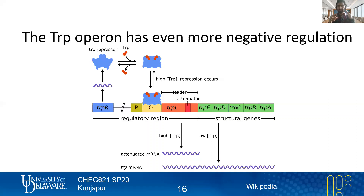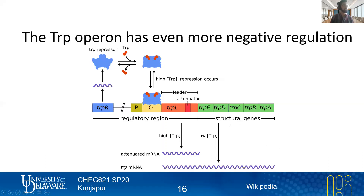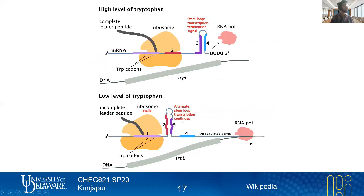Attenuation effectively results in premature termination of transcription. It relies on the idea that as an RNA is being made, a ribosome can come in and bind that transcript even as it's being elongated. What has evolved in several bacteria, including E. coli, is a dependence on tryptophan concentration. Under high tryptophan concentration, you don't get the transcript being fully elongated to include the biosynthetic genes. We can look at a little more molecular detail on how that happens in this slide and the next.